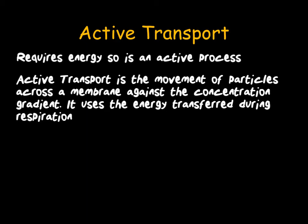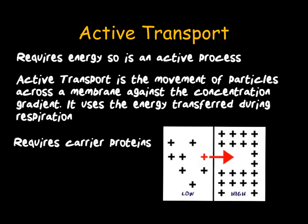This uses energy. A useful way to remember this is to think of it in a real-world situation. If you had a boulder at the top of a hill and wanted to get it down to the bottom, you'd be going down the concentration gradient from high to low — that would be very easy and wouldn't require energy. To move the boulder from the bottom to the top, against its concentration gradient, would require a lot of energy — therefore that would be active transport.